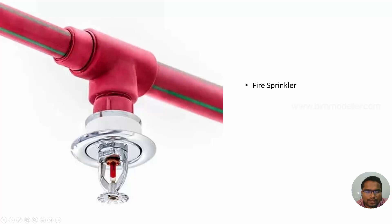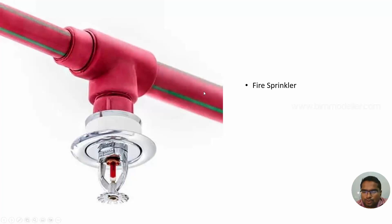This is a sprinkler. When heat touches it, the tube will blast — it becomes open. The pipe contains water, some other liquid, or foam, which will be spread into the rooms to extinguish the fires.